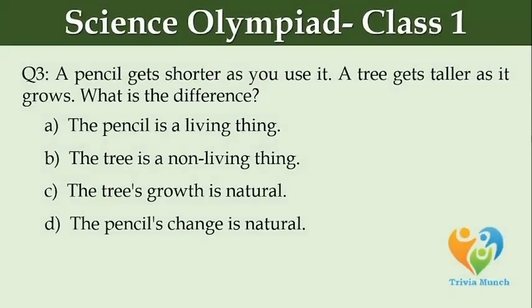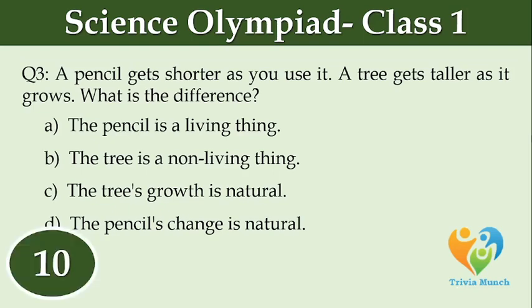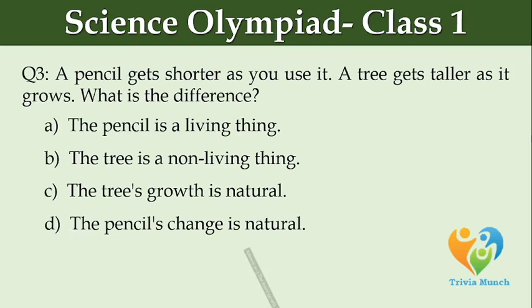A pencil gets shorter as you use it. A tree gets taller as it grows. What is the difference? Option A: The pencil is a living thing. Option B: The tree is a non-living thing. Option C: The tree's growth is natural. Option D: The pencil's change is natural.